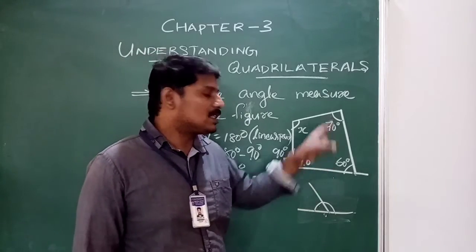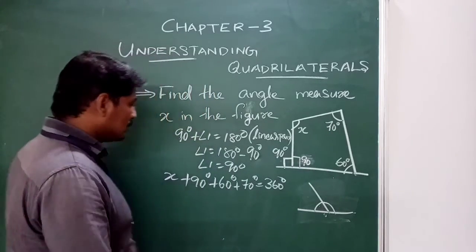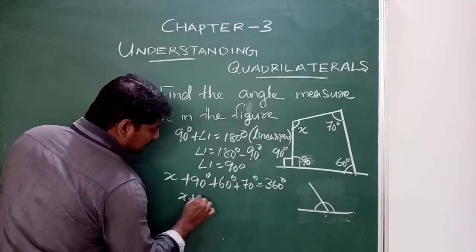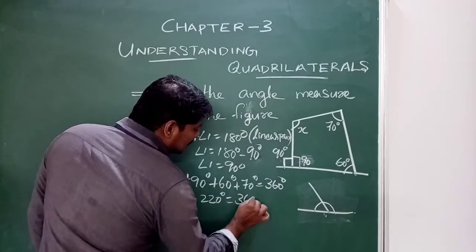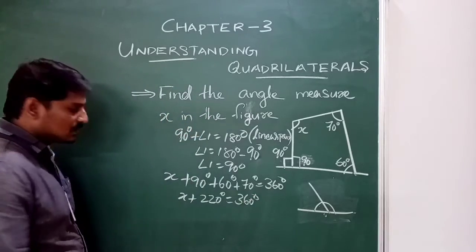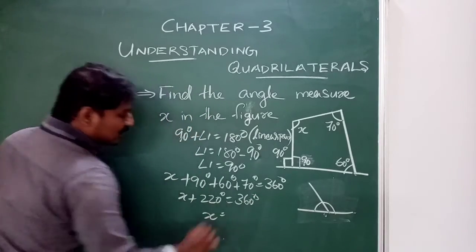90 plus 60 is equal to 150. 70 degrees is equal to 220 degrees. 90 plus 60 plus 70 is equal to 220. So x plus 220 degrees is equal to 360 degrees.